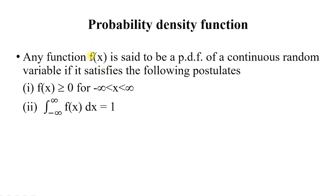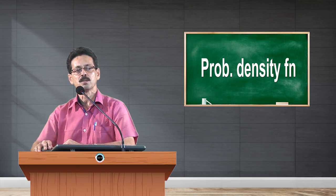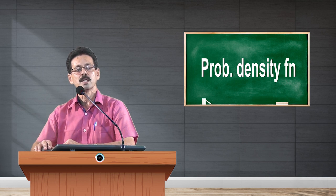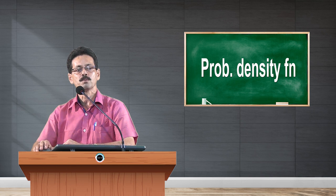The first condition is f(x) ≥ 0 for all values of x. Since it is a continuous random variable, x lies in any interval, generally minus infinity to plus infinity. The second condition is that the total probability — expressed as the integral from minus infinity to plus infinity of f(x) dx — must equal 1. If these two conditions are satisfied, then f(x) is called a probability density function.